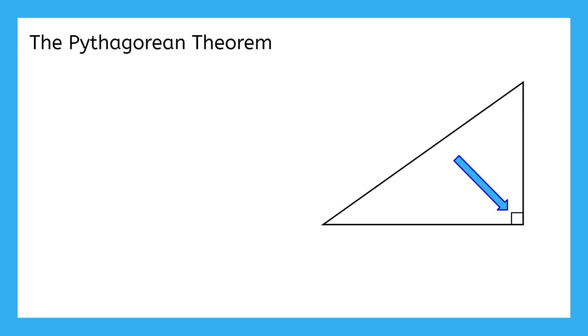On a right triangle, the sides have certain names. The hypotenuse is the longest side of the triangle, and it's always opposite to the right angle. The two sides that meet up at the right angle are called the legs.